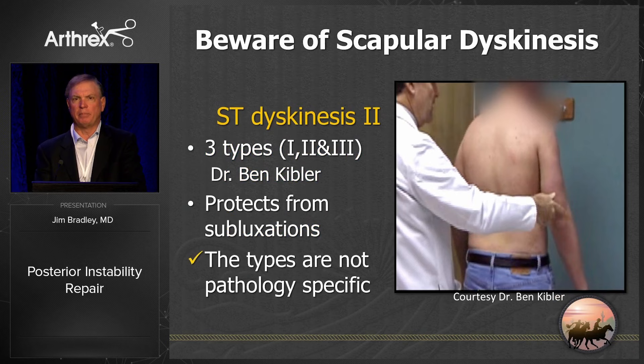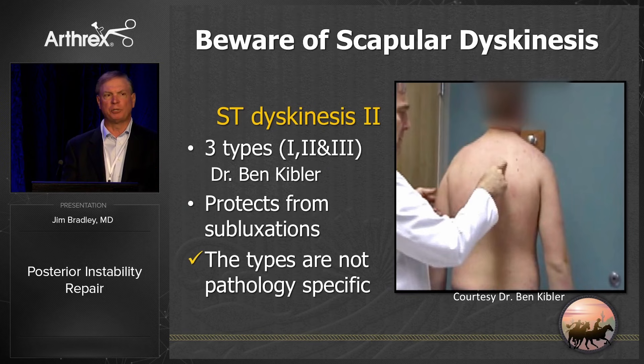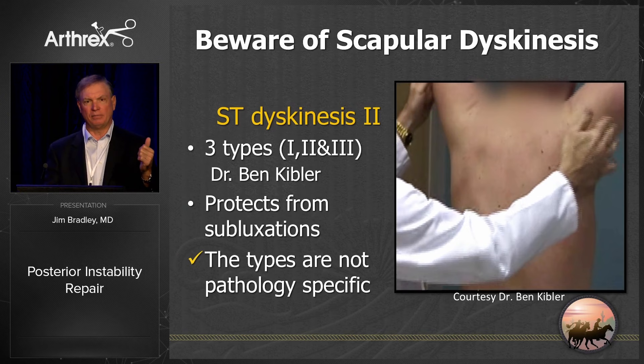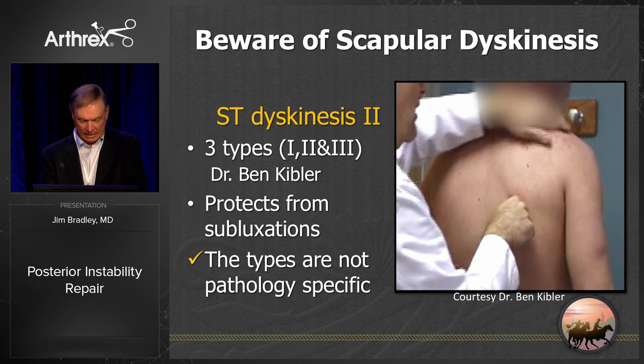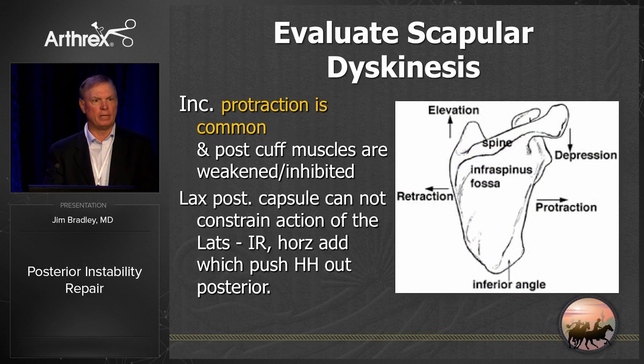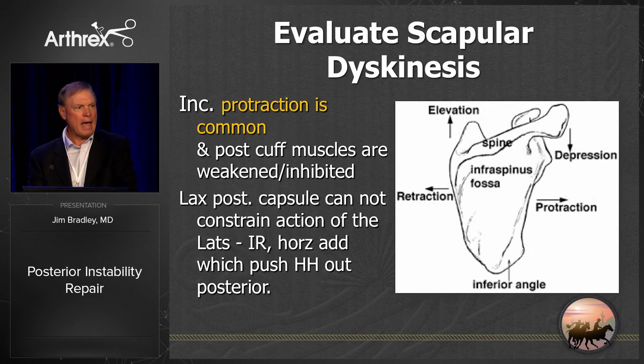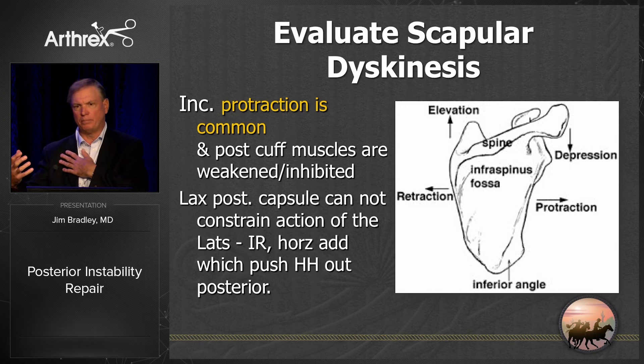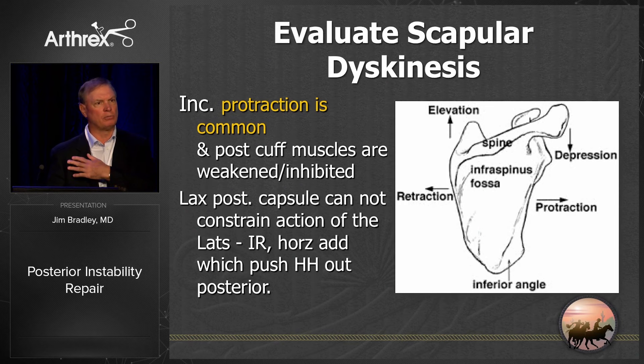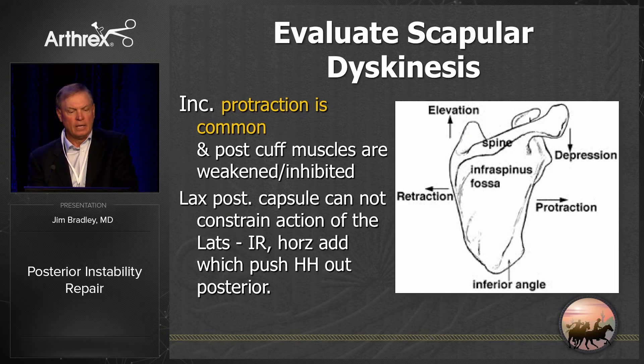Ben Kibler taught us to beware of scapular dyskinesis, because patients often present with scapular dyskinesis or winging, but all they're doing is protecting their shoulder from going out the back. You literally have to fix the posterior instability for the scapular dyskinesis to go away. In throwers, protraction is very common — you have to accept that, especially in pitchers. A tight pec in front and overactive lats just overpower the back, the capsule can't restrain it, and it pulls them out posteriorly. Be careful to examine tightness in pec major and minor.